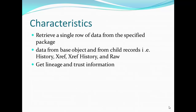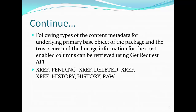What are the characteristics of the Get API? If you are going to retrieve a single record, then the Get API is helpful. It is used to retrieve a single row of data from a given package, from the base object, and also its corresponding child data such as history, cross-reference, history cross-reference, and raw table.